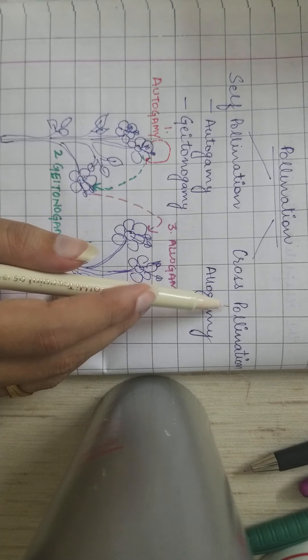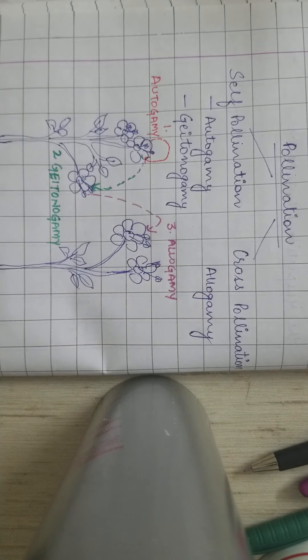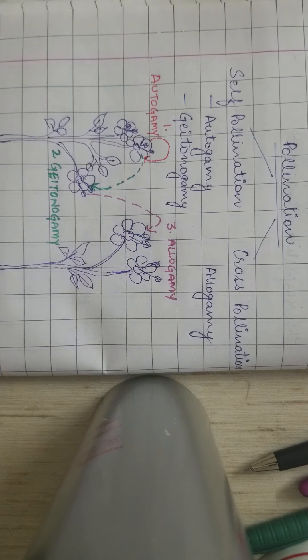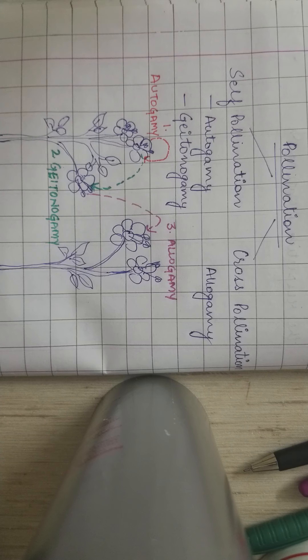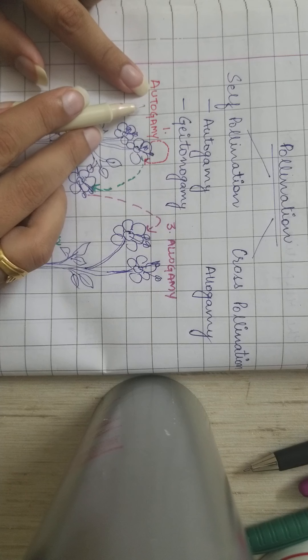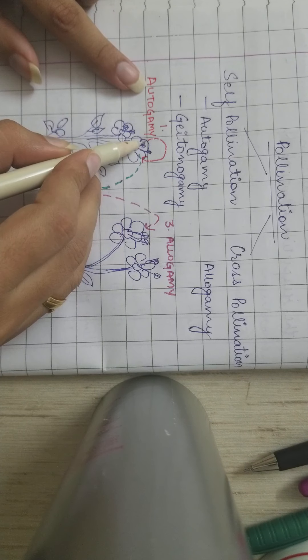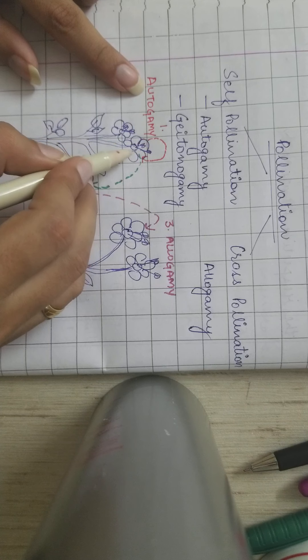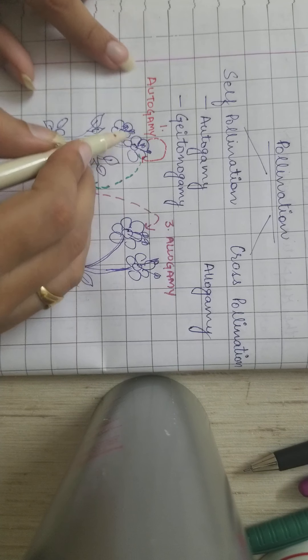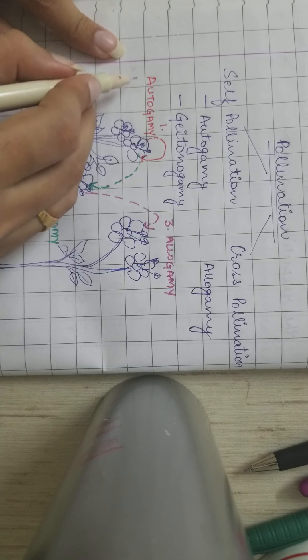Self-pollination is also of different types. The first is autogamy. In autogamy, the pollen grains from one flower will fall on the same flower — only that one flower is involved. So pollen grains fall on the stigma of the same flower. That is known as autogamy.